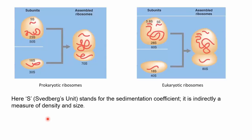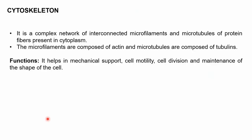The next is the cytoskeleton. As the name suggests — cyto meaning cell — the cytoskeleton provides support to the cell, just like our skeletal system. It is a complex network of interconnected microfilaments and microtubules of protein fibers present in the cytoplasm. Microfilaments are composed of actin, and microtubules are composed of tubulins. The main functions of the cytoskeleton are to provide mechanical support, cell motility, movement, cell division, and maintenance of cell shape.